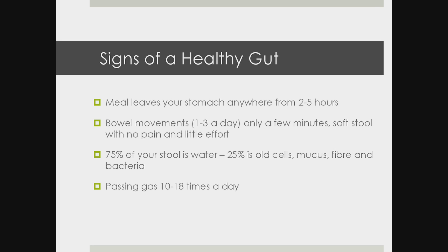Here are some signs of a healthy gut. When you eat a meal, it leaves your stomach anywhere between two to five hours. A healthy gut will have about one to three bowel movements a day — they should only last a few minutes, be soft stool with no pain and very little effort. Your stool is made up of 75% water and 25% old cells, mucus, fiber, and bacteria. A healthy individual should also be passing gas between 10 to 18 times a day.